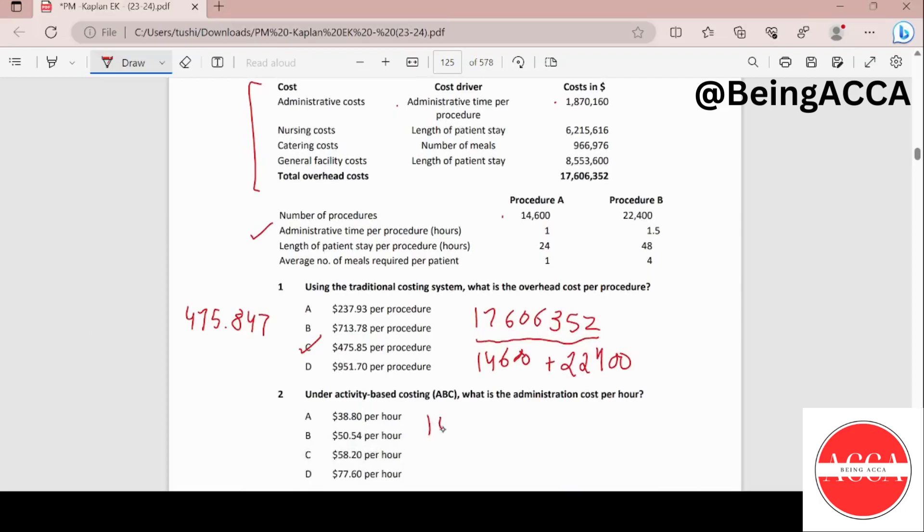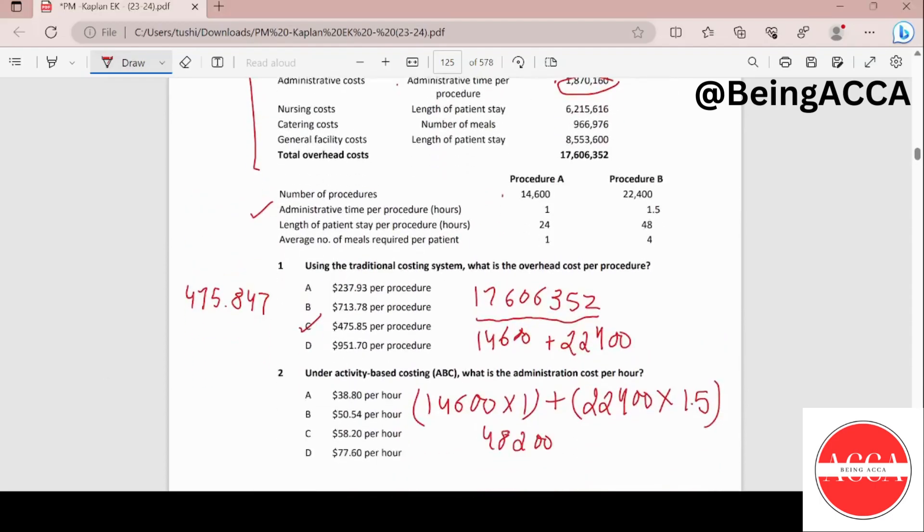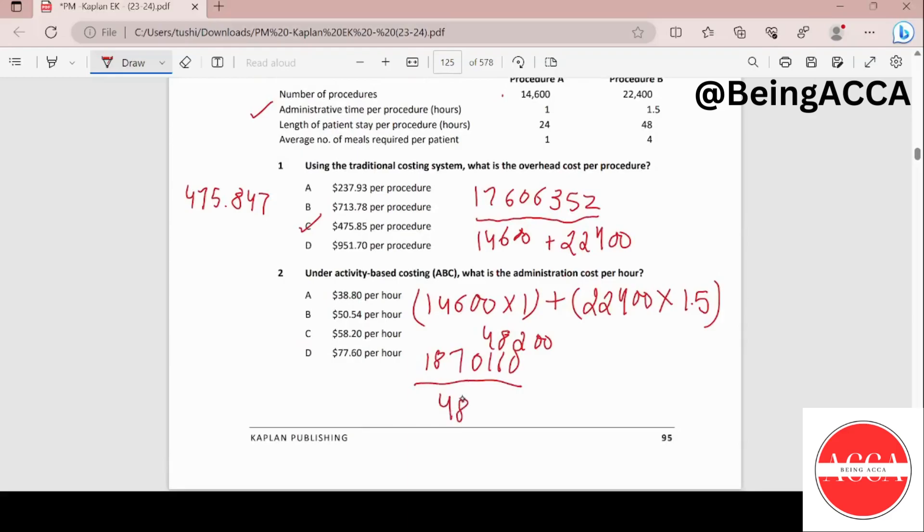So this is 14600 multiplied by 1 plus 22400 multiplied by 1.5. So performing this calculation I get 48200. So these are my total number of hours and then I'm just going to divide this figure 1870160 with this figure that I've gotten. This is 1870160 and I have divided this by 48200. 70160 divided by 48200 and I get my answer as 38.8 which makes my option A as the correct answer.